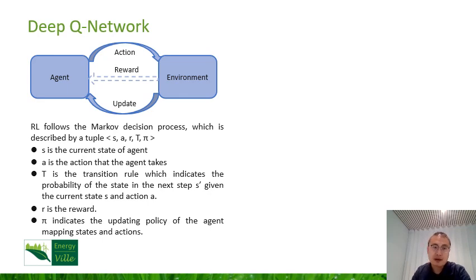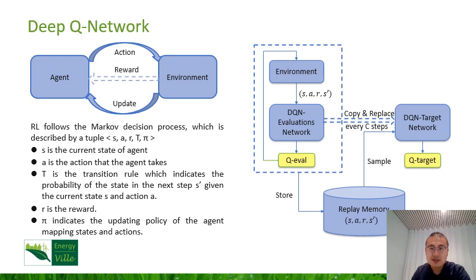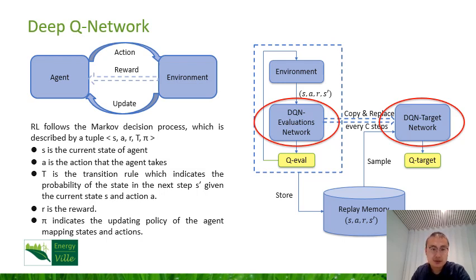In the DQN algorithm, two artificial neural networks are introduced: the evaluation neural network and the target neural network. The input of both neural networks is the current state, and the output is the probabilities of taking each action. So based on the output of the neural network, the action can be decided. The two neural networks share the same structure. The difference is that the evaluation neural network updates itself at every step, while the target neural network stays unchanged and copies the evaluation neural network after a certain number of steps. This is called a replay memory scheme, which can increase the stability of the training process.